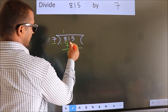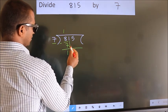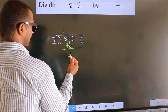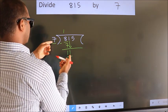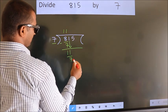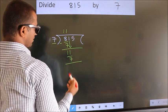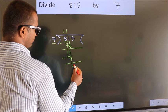After this, bring down the beside number. So 1 down. So 11. A number close to 11 in 7 table is 7 once 7. Now we subtract. We get 4.